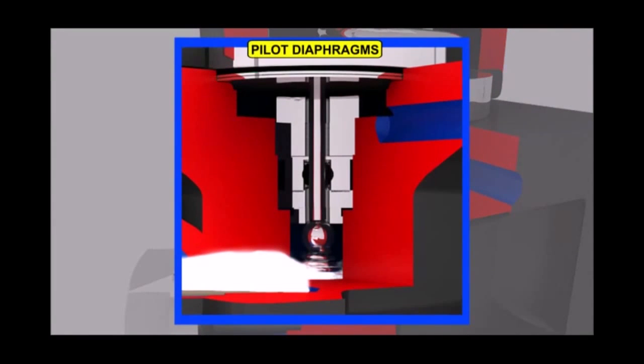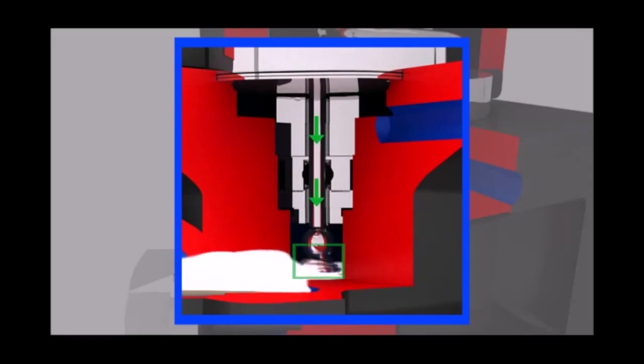This results in deformation of the pilot diaphragms, which in turn pushes the pilot valve plunger and SS ball against the spring located below, causing the pilot valve to open.